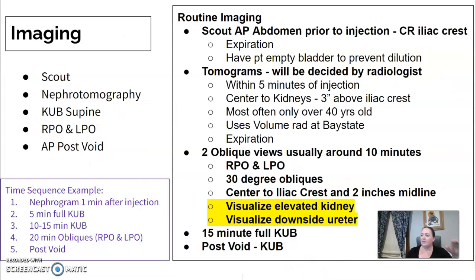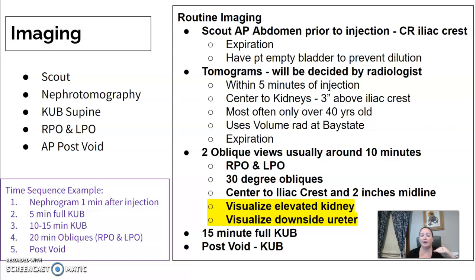For the IVU, there is a timing protocol — each department will differ, but most start with a scout abdomen. Tomograms, if used, are done after injection. The series may include supine KUBs or oblique abdomens to evaluate the kidneys or ureters, taken at timed intervals. Typically a department protocol might say: do this at five minutes, ten minutes, fifteen minutes, and then take a post-void image.